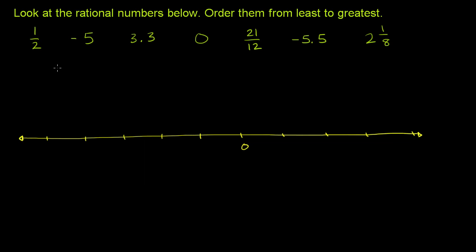All right. So let's start with 1 half. 1 half is directly in between 0 and 1. It is half of a whole. This right here would be 1 whole. Let me label that. This over here is 1. So 1 half is directly between 0 and 1. So 1 half is going to sit right over here.